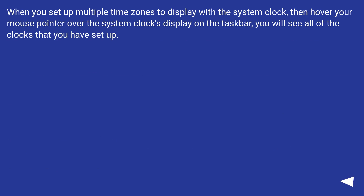When you set up multiple time zones to display with the system clock, then hover your mouse pointer over the system clock's display on the taskbar, you will see all of the clocks that you have set up.